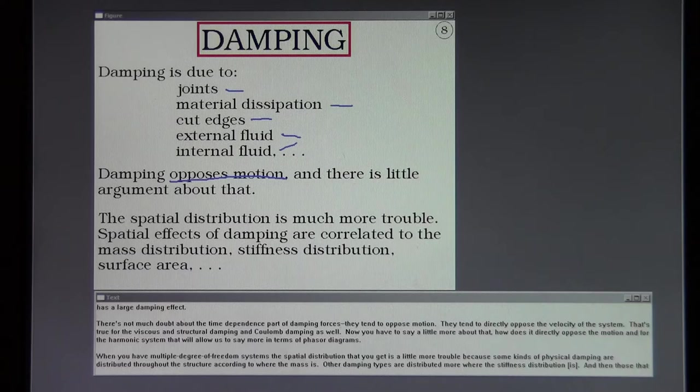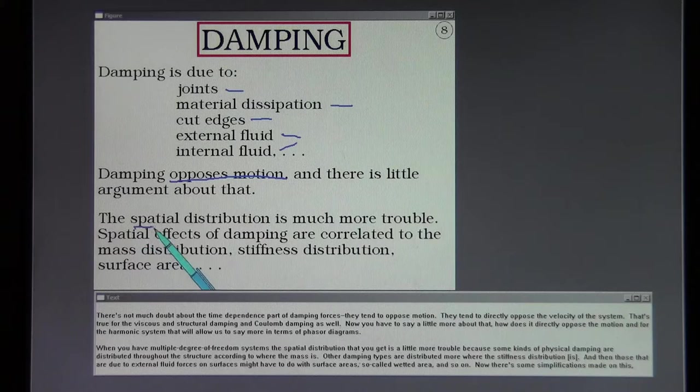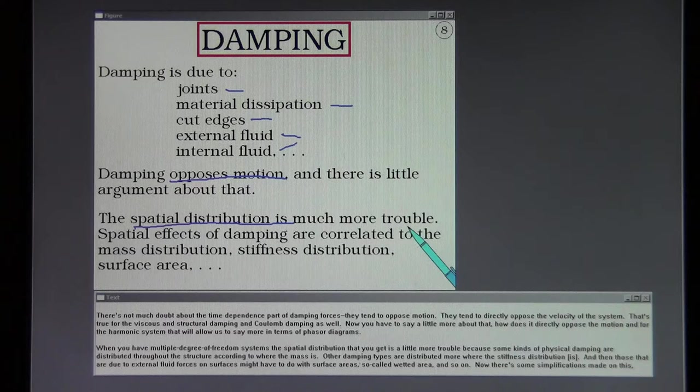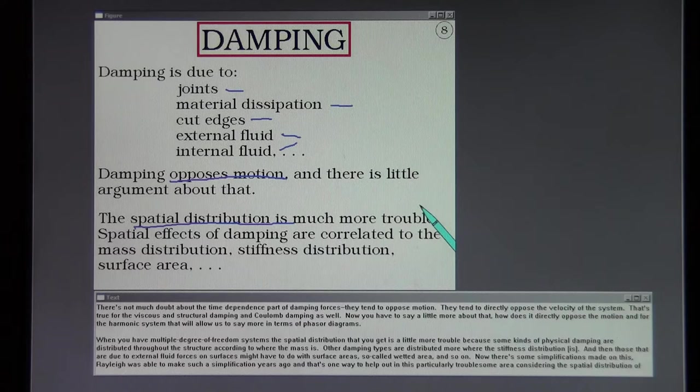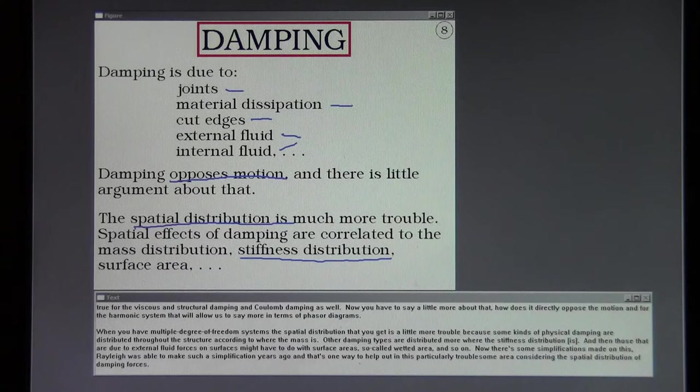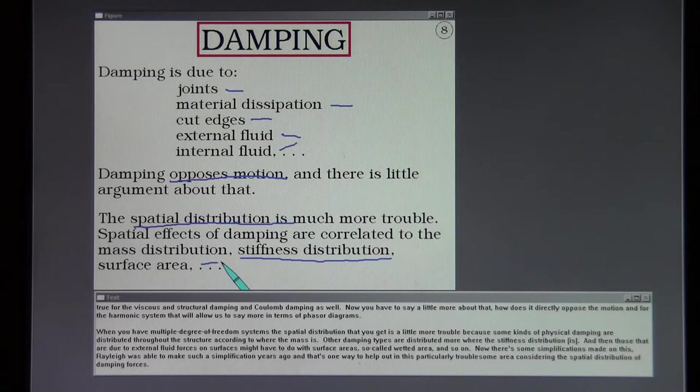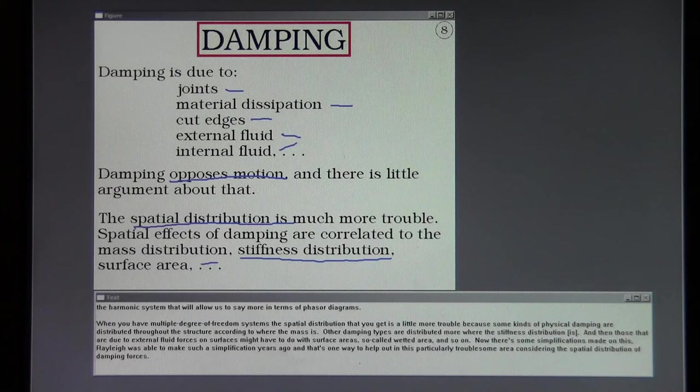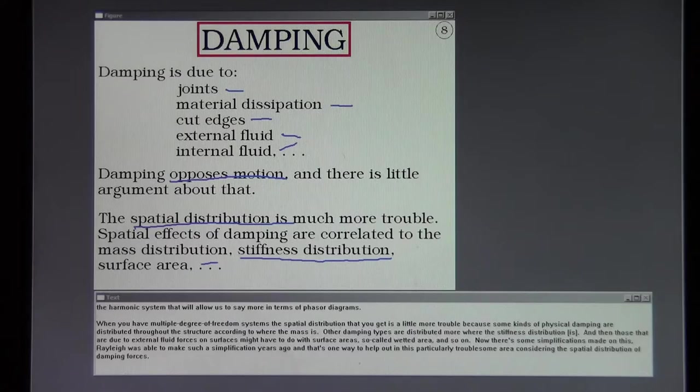When you have multiple degree of freedom systems, the spatial distribution that you get is a little more trouble because some kinds of physical damping are distributed throughout the structure according to where the mass is. Other damping types are distributed more where the stiffness is. And then those that are due to external fluid forces on surfaces might have to do with surface area, so-called wetted area, and so on. Now there's some simplifications made on this. Rayleigh was able to make such a simplification years ago and that's one way to help out in this particularly troublesome area considering the spatial distribution of damping forces.